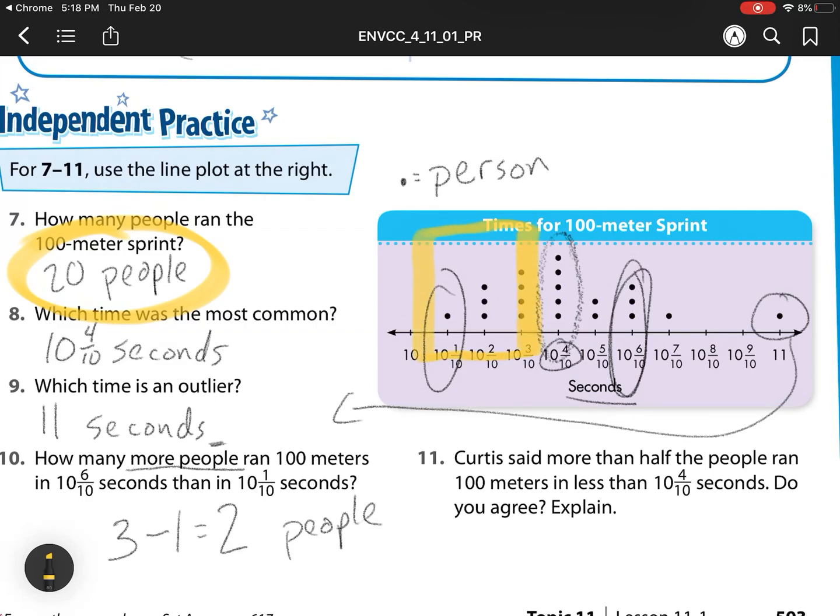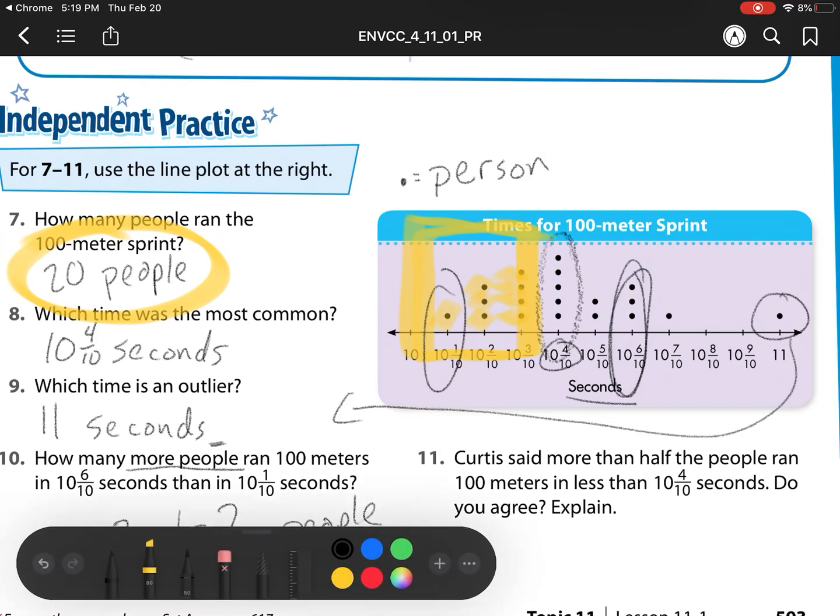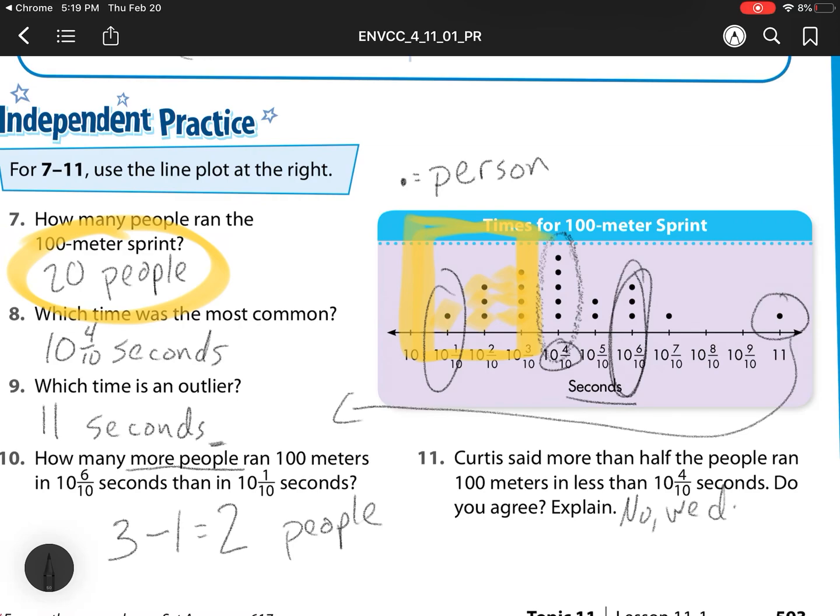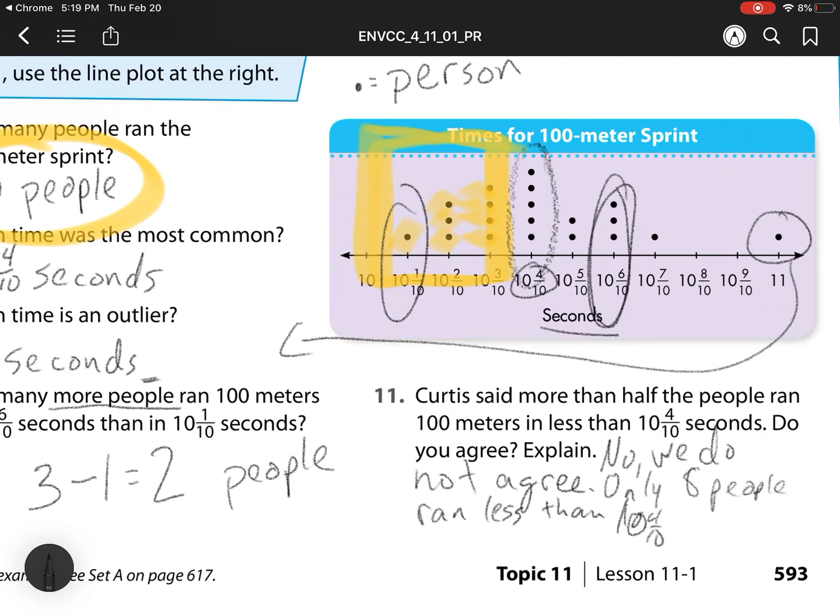And he's saying less than. So he's looking at these people right here. So let's check what we have. We have 1, 2, 3, 4, 5, 6, 7, 8. So there's only 8 people ran that. So our answer is going to be no. We do not agree. And why? So that explanation, only 8 people ran less than 10 and 4 tenths. I'm sorry, that's the sloppy one. I'm at the bottom of my screen. Only 8 people ran less than 10 and 4 tenths of a second. And half of 20 would need to be at least 10.